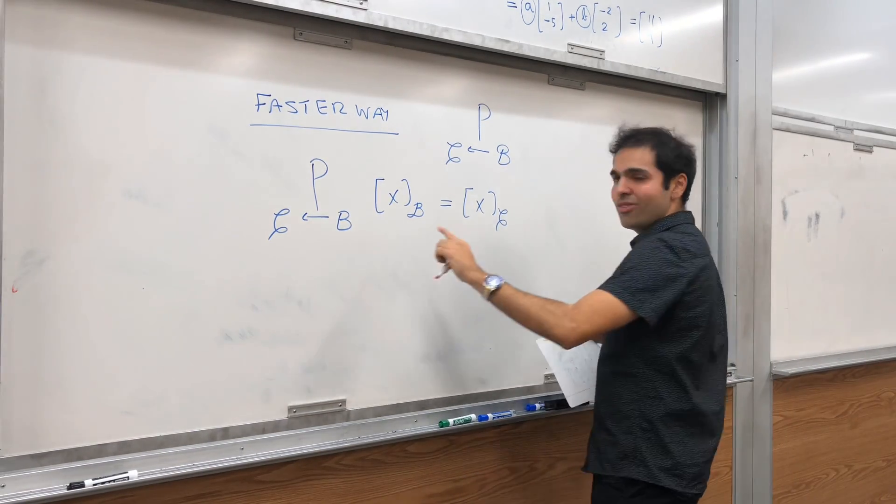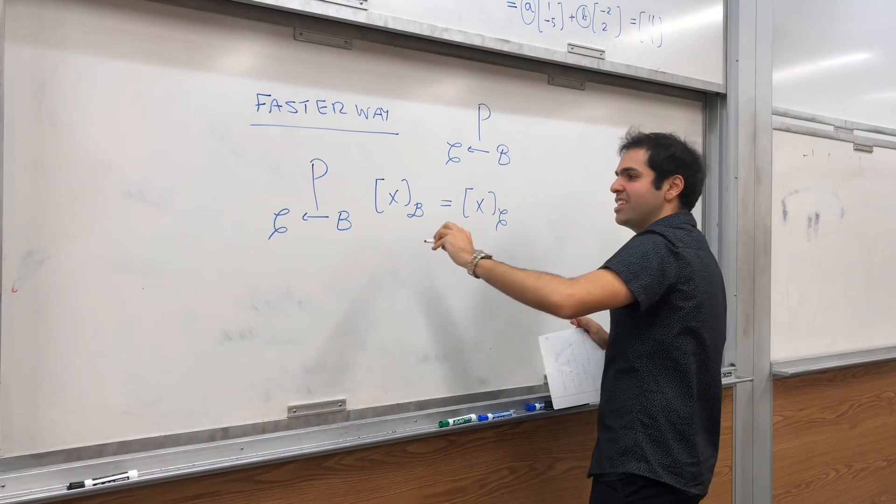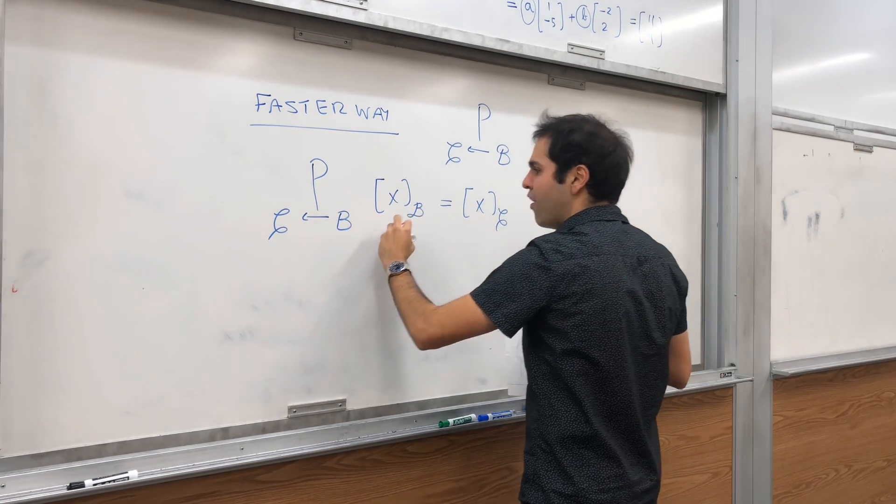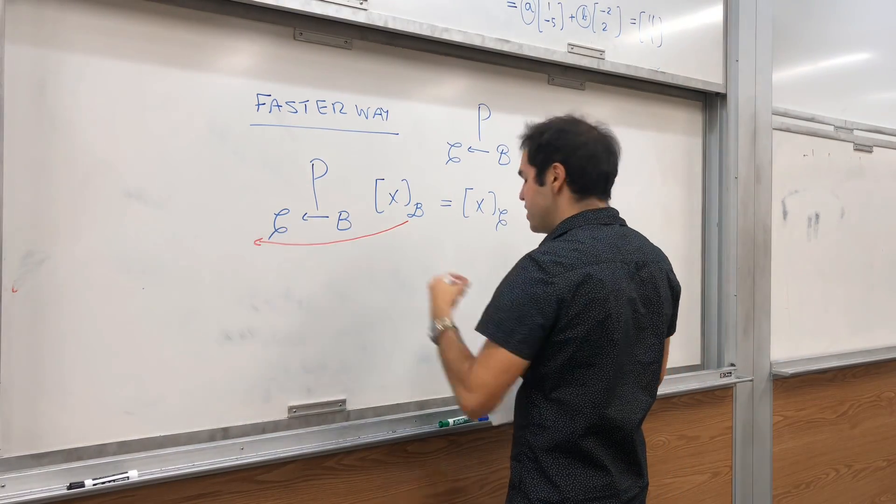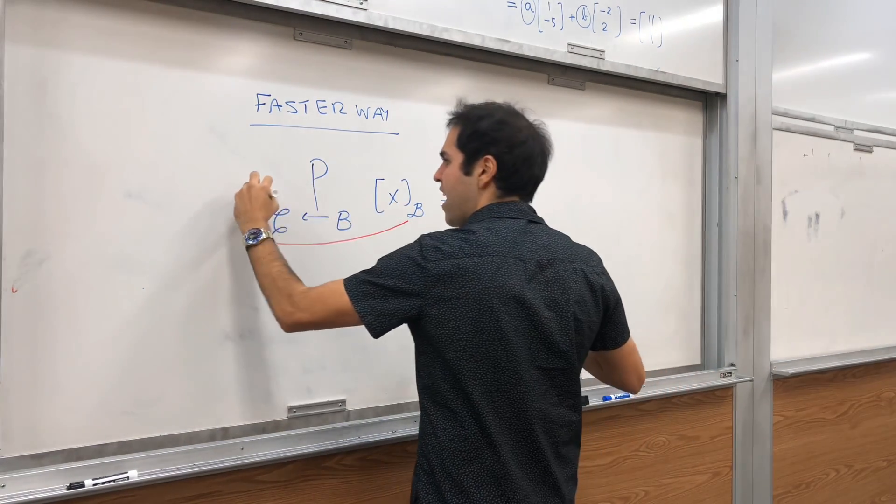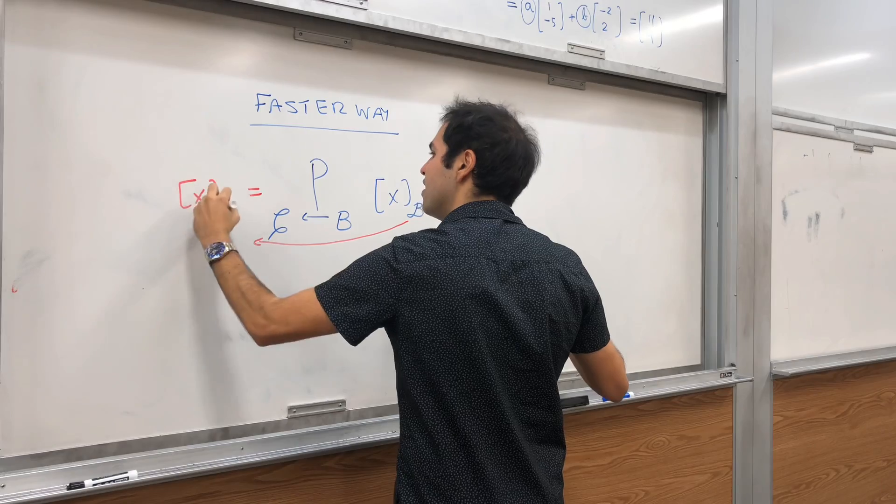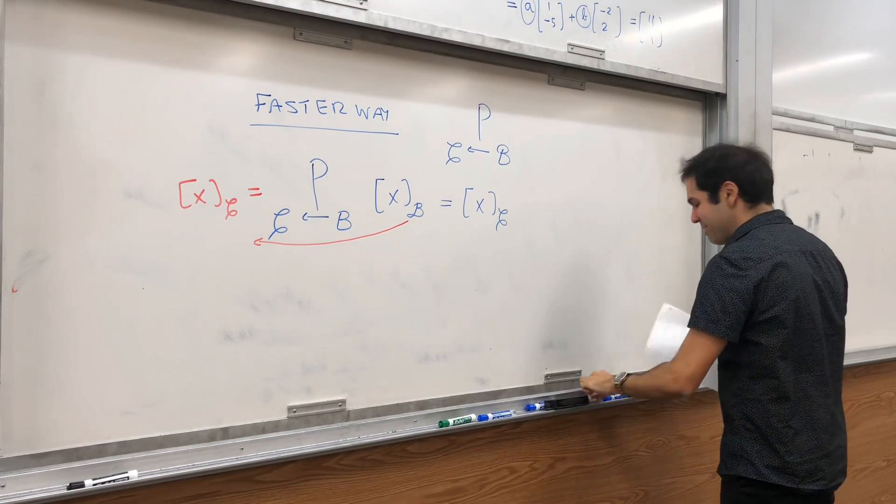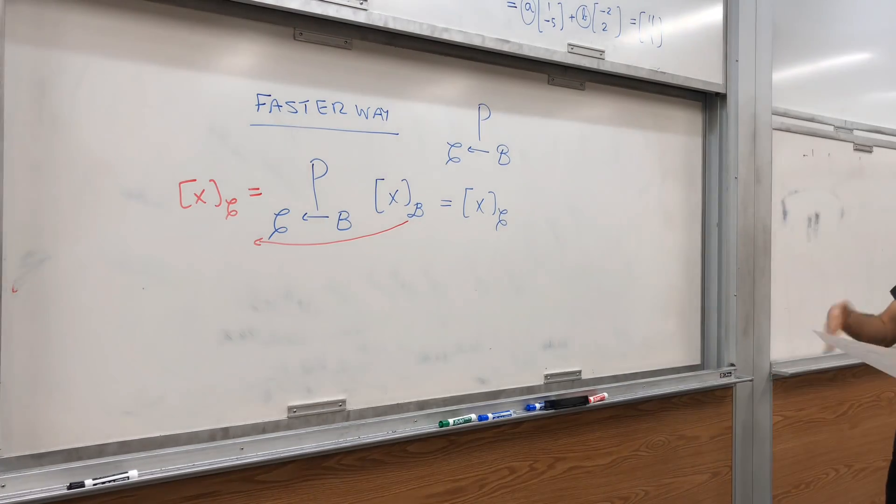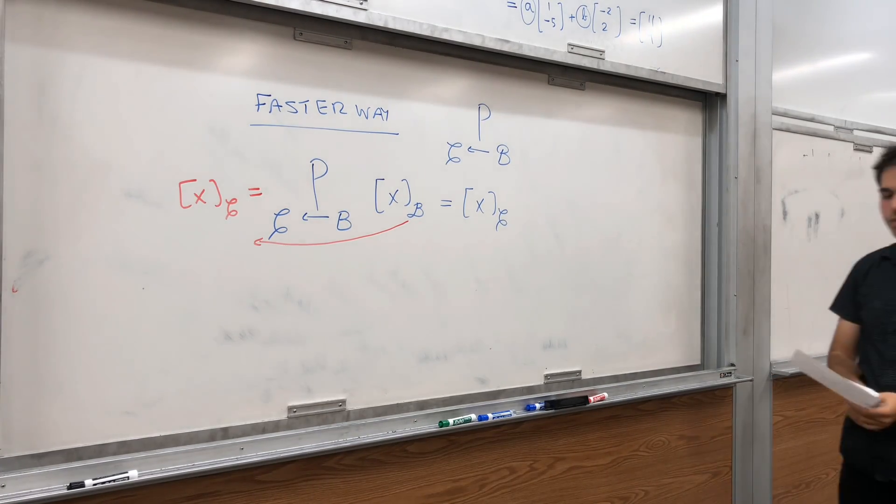And why is it written this way? It's actually a great notation, because if you just follow the arrows, you see that you start with XB, and you end up with XC. And yes, also XD, but that's something different. And the question is, how do you construct this matrix?